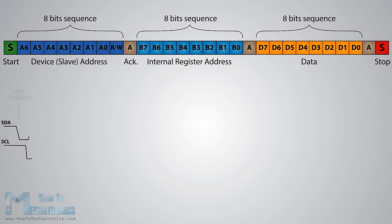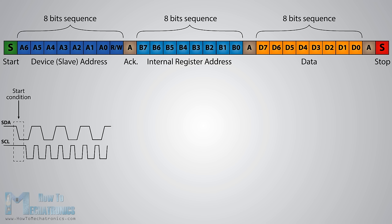The start condition occurs when the data line drops low while the clock line is still high. After this the clock starts and each data bit is transferred during each clock pulse. The device addressing sequence starts with the most significant bit first and ends with the least significant bit, and it is actually composed of 7 bits because the 8th bit is used for indicating whether the master will write to the slave (logic low) or read from it (logic high).